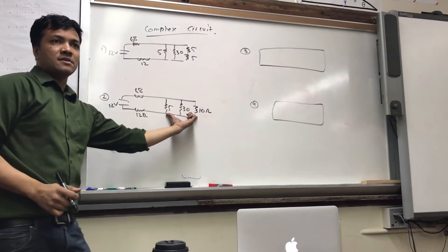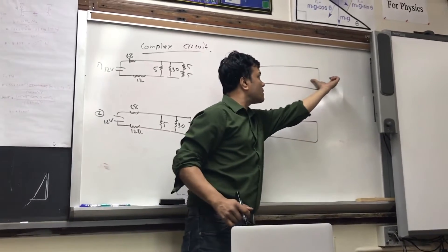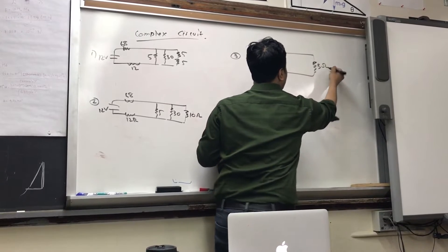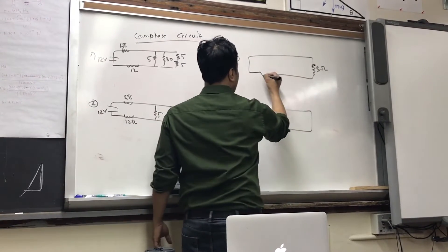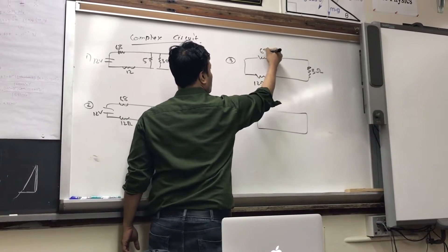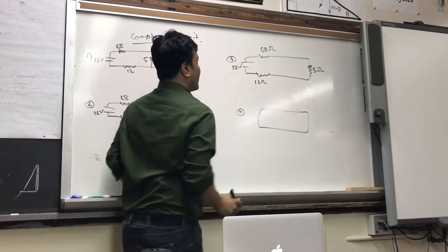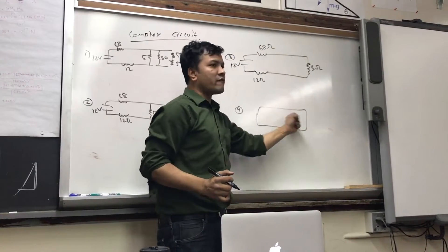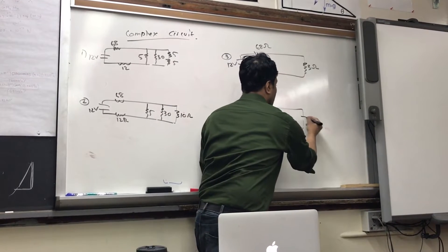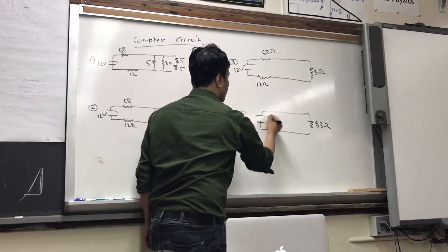Since this is what? Parallel. Since this is parallel, what should we write here? Three. Three. And everything will keep the same. So since this is series, what should we write here — sixty or eighty-three? Eighty-three. And of course this is the same.